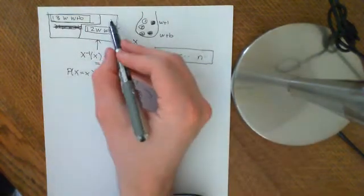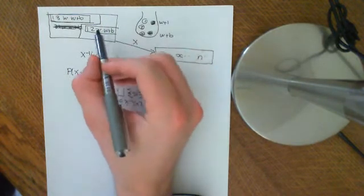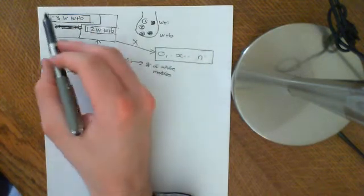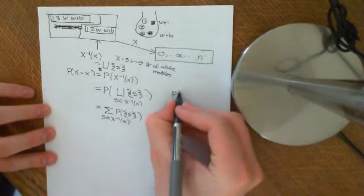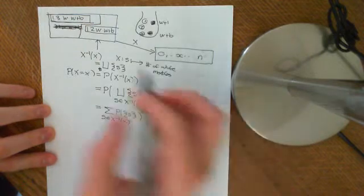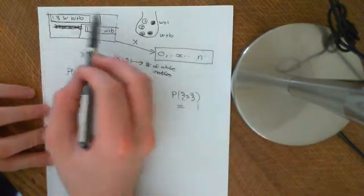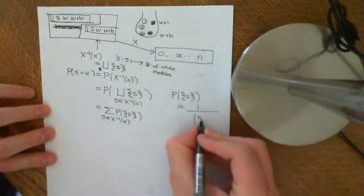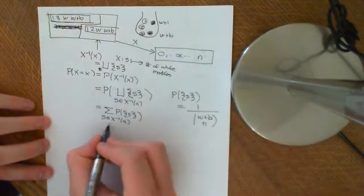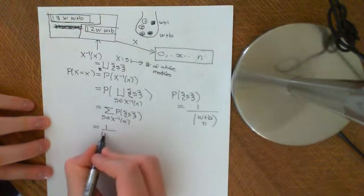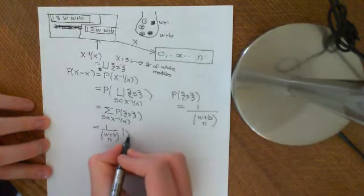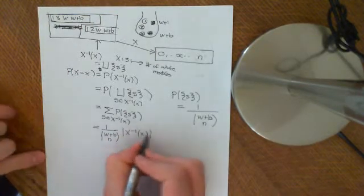By the second axiom of probability, this is just equal to the sum over every outcome S in the pre-image of little x of the probability of that singleton outcome. The great thing is that the probability of each individual outcome is utterly identical, because each ball is equally likely to be picked out of the bag — each ball from 1 to W plus B. So the probability of a singleton S is equal to 1 over the total number of outcomes, which is W plus B choose N. Now I need to work out how many outcomes are in this set — that is, how many outcomes have you selecting exactly x white marbles and N minus x black marbles.